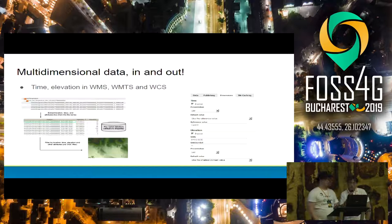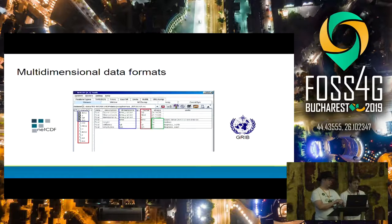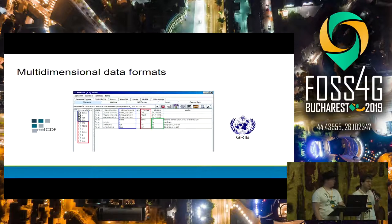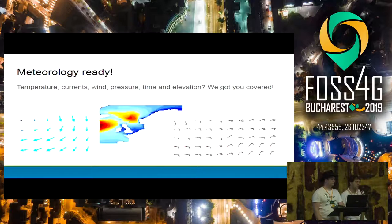If you are into weather data, GeoServer has good support for multidimensional data. Time and elevation dimensions and custom dimensions are available in WMS, WMTS, and WCS, so you can display time-varying and multidimensional data in various ways. We support NetCDF and GRIB as both inputs and outputs — so you can download via WCS your multidimensional dataset while keeping it multidimensional rather than extracting one GeoTIFF at a time.